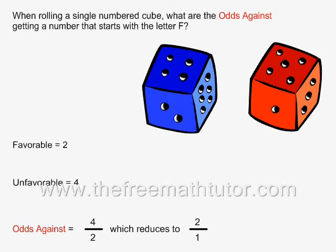Odds against is equal to unfavorable over favorable, which in this case is equal to 4 over 2, and this reduces to 2 over 1.